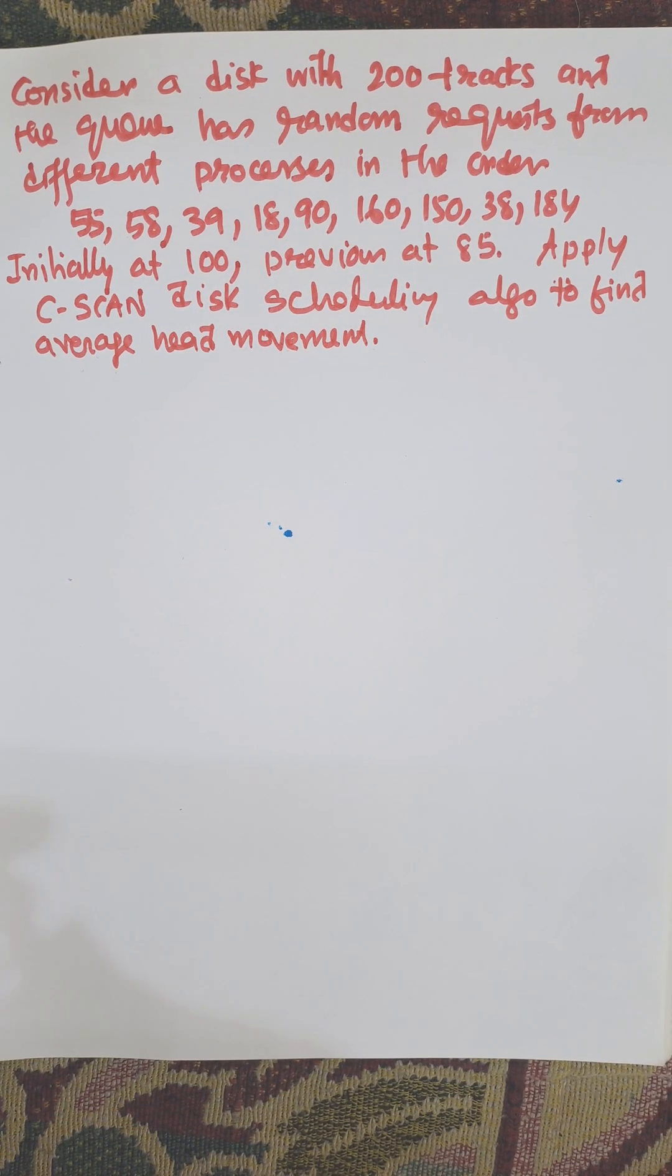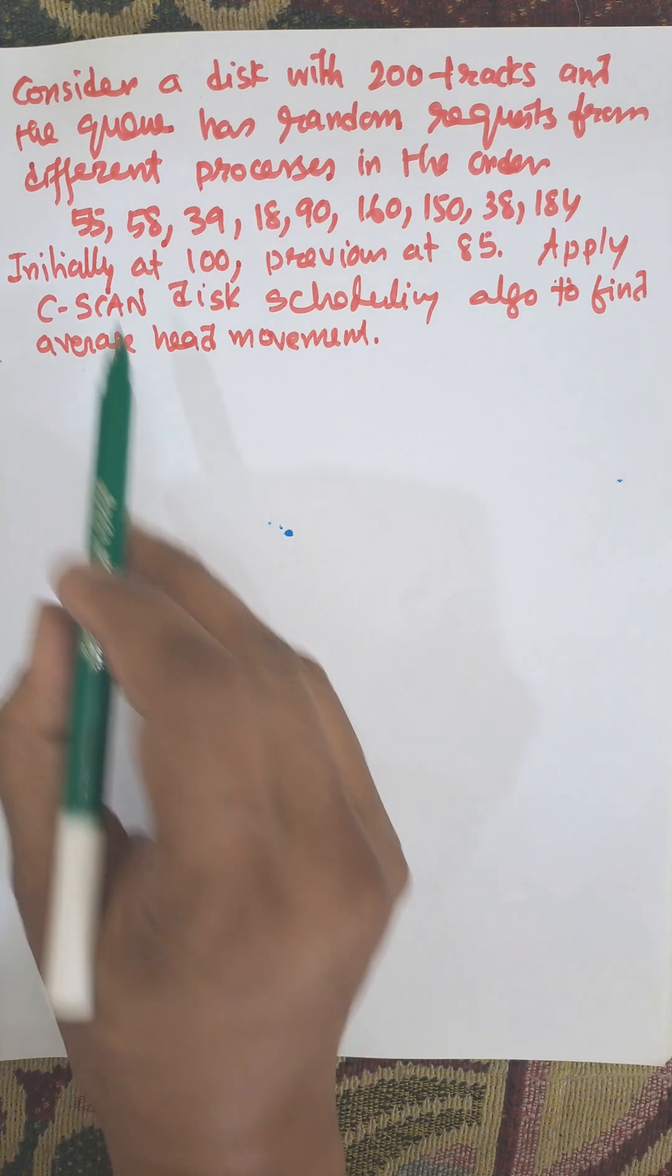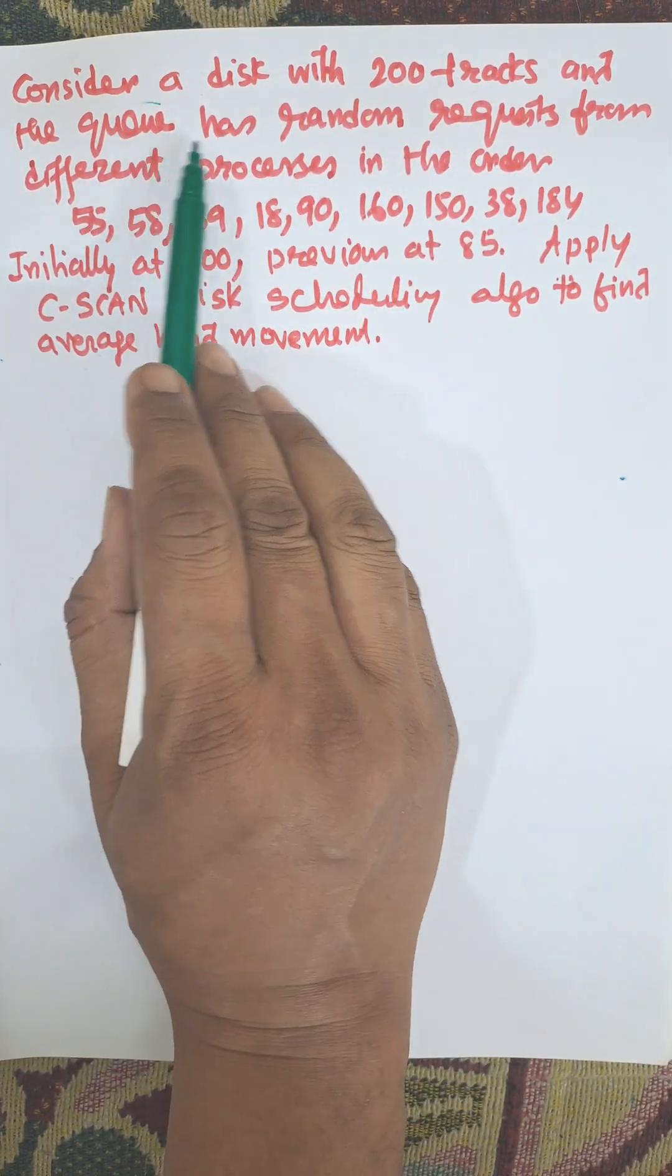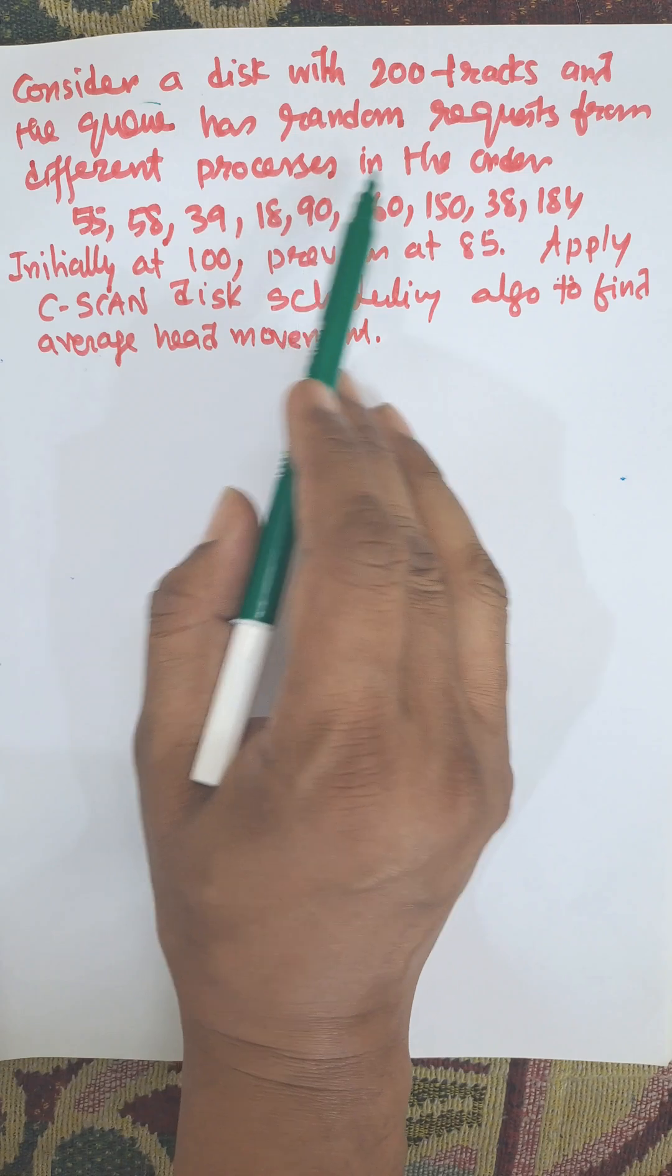In this video I am going to find C-SCAN disk scheduling algorithm. In this problem there are 200 tracks and the queue has random requests from different processes in the order: